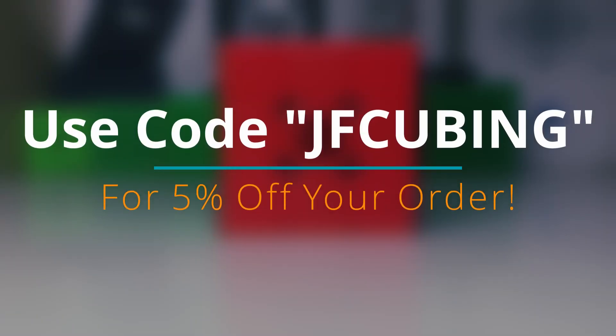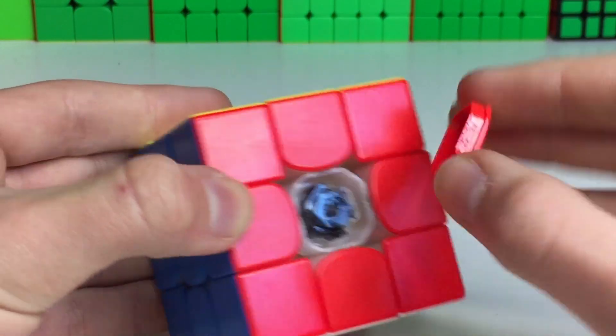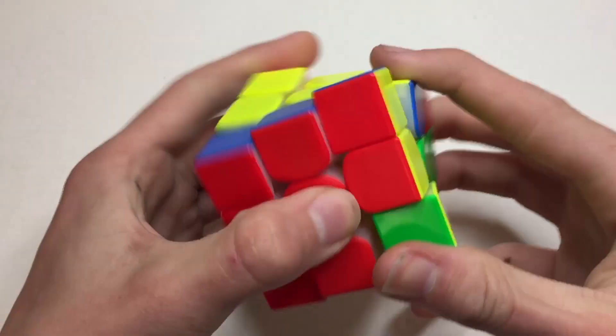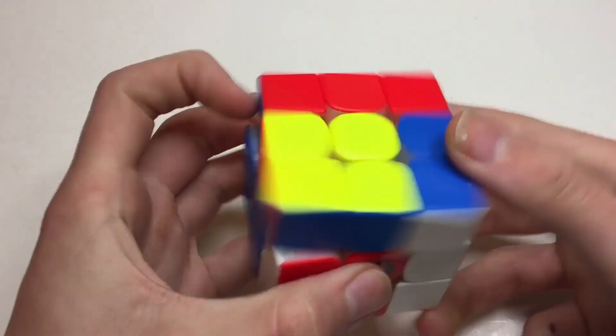This cube is lubed with Lubicle Black on the core and a mixture of Angstrom Gravitas, Dignitas, and DNM-37 on the pieces. This cube has a very light and fast yet controllable and smooth feel.